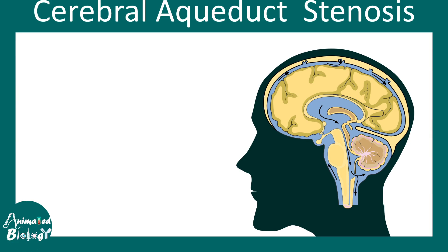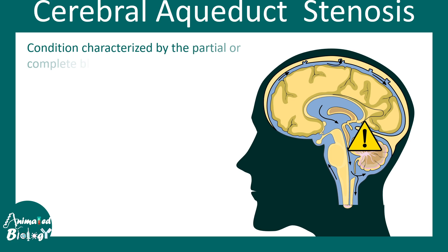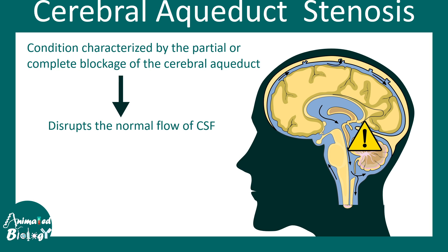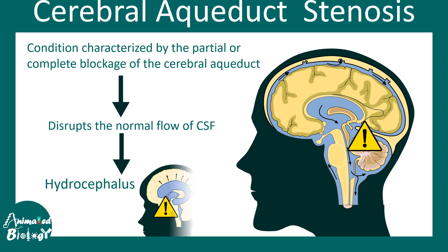In this video we'll be talking about cerebral aqueduct stenosis. This is one type of disorder that blocks the cerebral aqueduct, the passageway between the third and the fourth ventricle. This disrupts the normal CSF flow and ultimately leads to obstructive hydrocephalus.